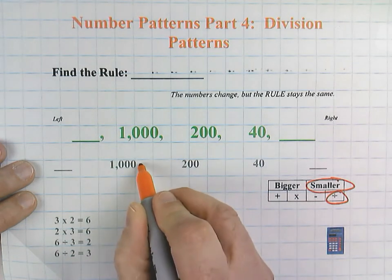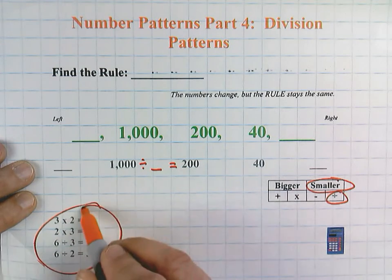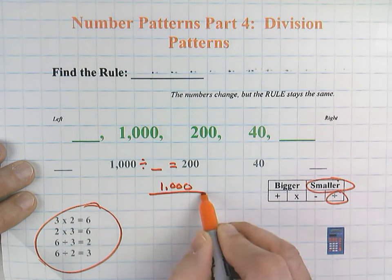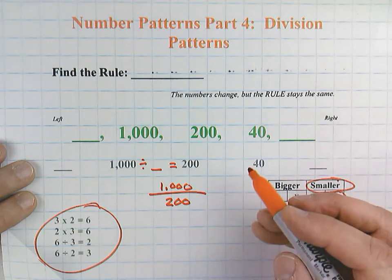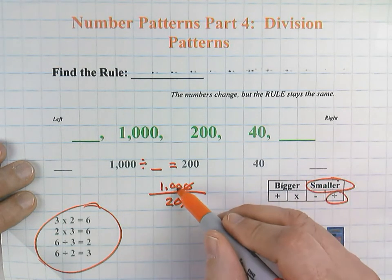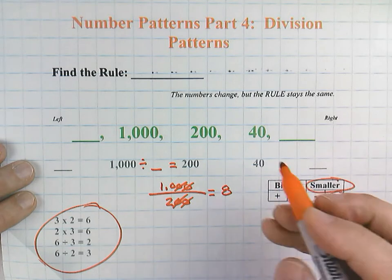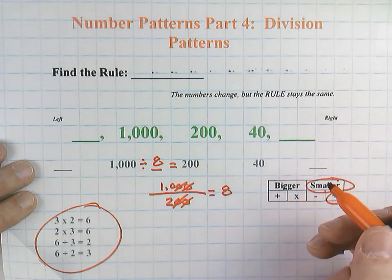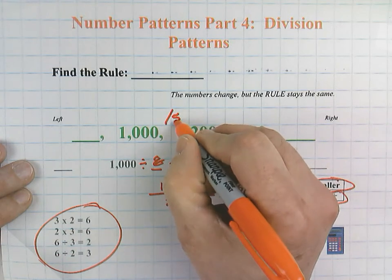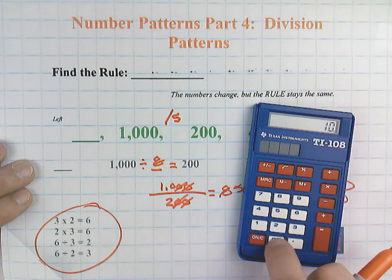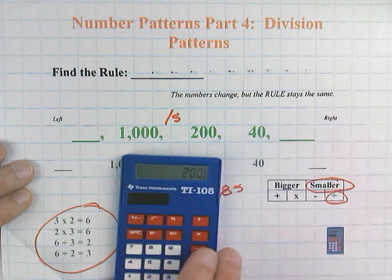So here we're going to do 1,000 divided by blank equals 200. And we said we could use our fact family. So I'm going to rewrite this as 1,000 divided by 200 because a fraction represents a division statement. Honestly, we could really just cancel out these zeros here and do 10 divided by two would equal five, which would mean this would be a divide by five rule. But let's just prove it anyway. 1,000 divided by five equals, there's our 200.